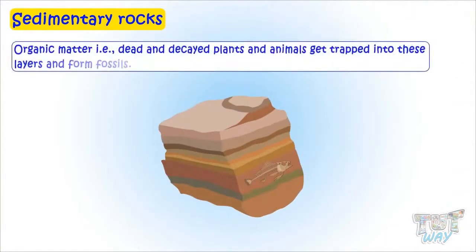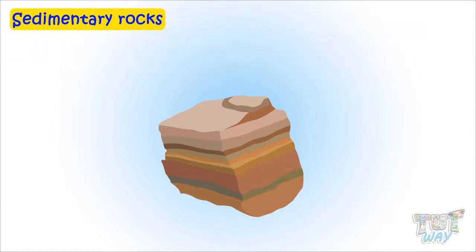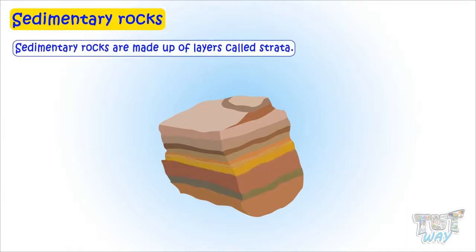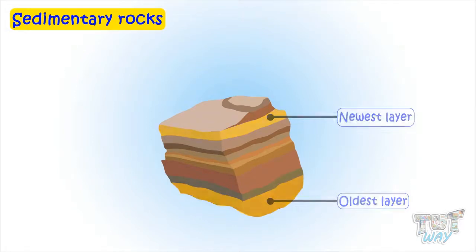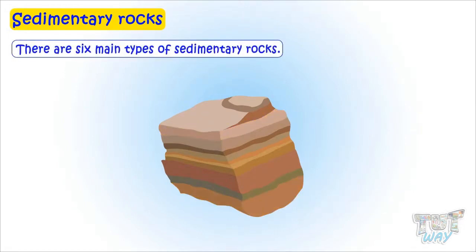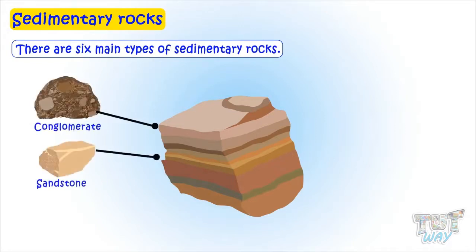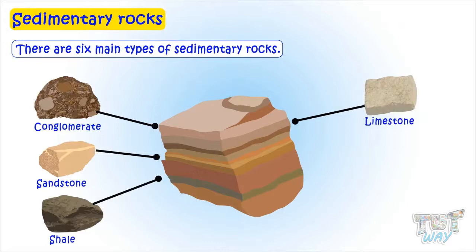Organic matter — that is, dead and decayed plants and animals — gets trapped into these layers and forms fossils. Sedimentary rocks are made up of layers called strata. The layer at the bottom is the oldest one and the topmost layer is the newest one. There are six main types of sedimentary rocks including conglomerate, sandstone, shale, limestone, gypsum, and greywacke.